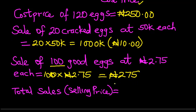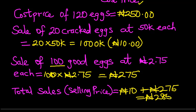Now let's find the total sales. How much were all the eggs sold? That means we are getting the selling price. That will be 10 naira, which is the price for the cracked eggs, plus 275 naira, which is the price for the good eggs. It will give us a total of 285 naira altogether. So the selling price is 285 naira.